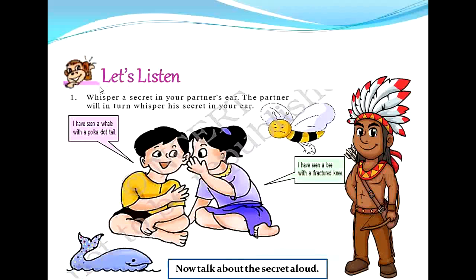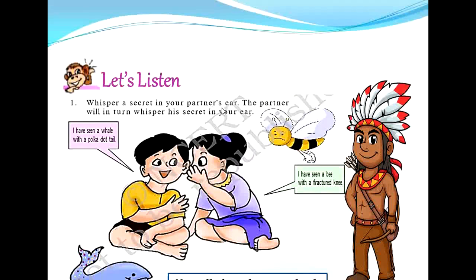The first textual exercise is 'Let's Listen.' Whisper a secret in your partner's ear. The partner will in turn whisper his secret in your ear. This is an activity meant to be conducted in a classroom. Since we are not in a regular classroom, let me just read through it and once the schools reopen we can do it. Here the boy says: I have seen a whale with a polka dot tail. And the girl says: I have seen a bee with a fractured knee. I'm sure you would have enjoyed this activity in a classroom.